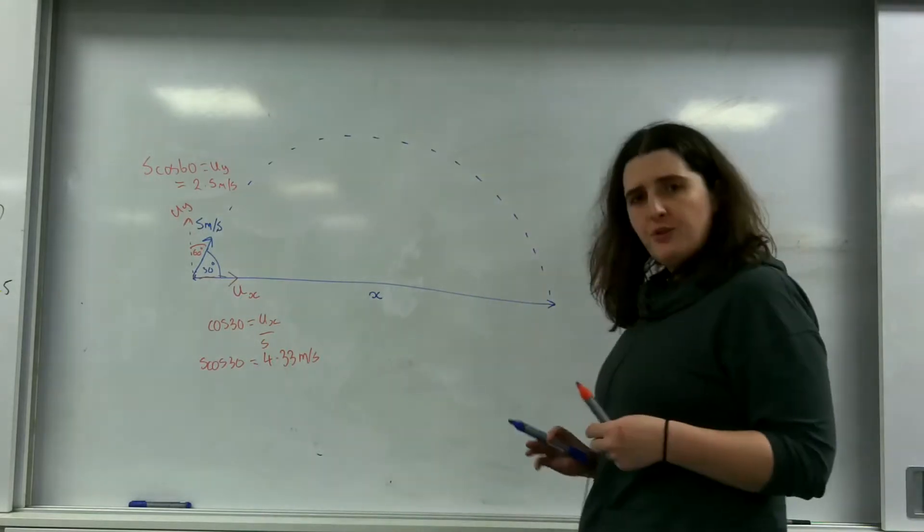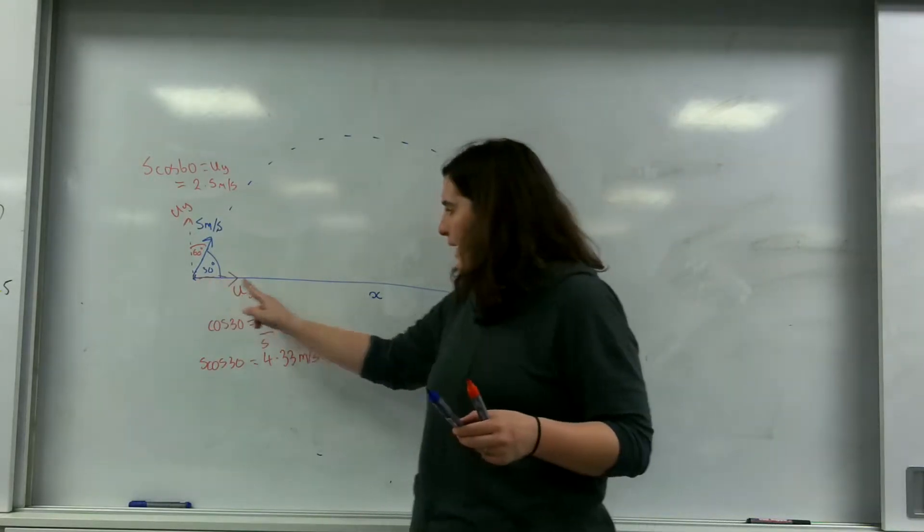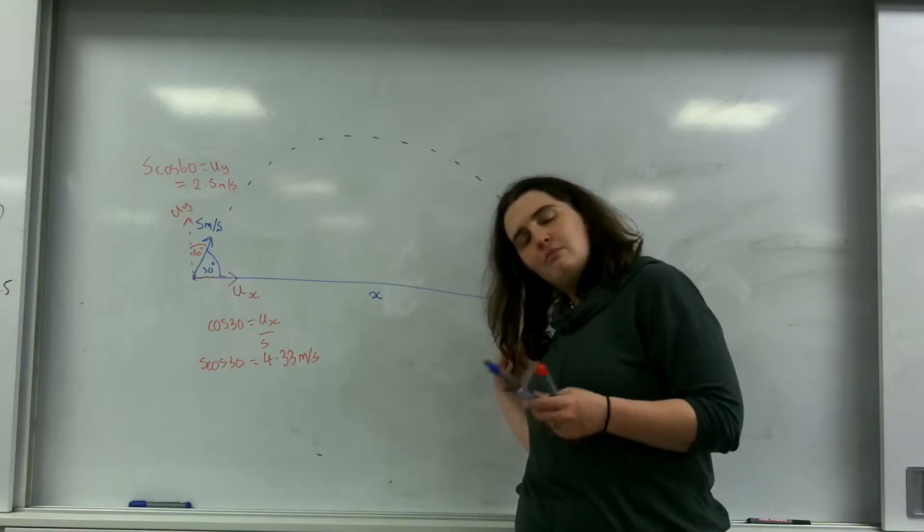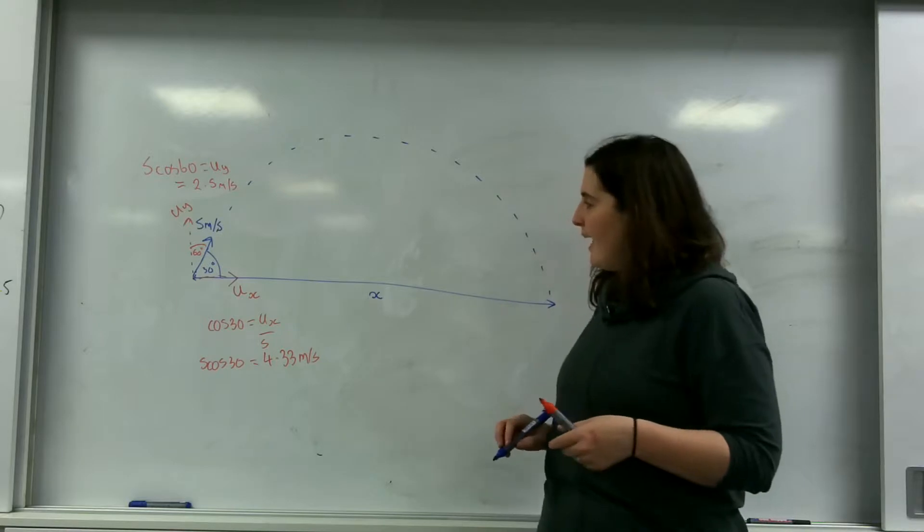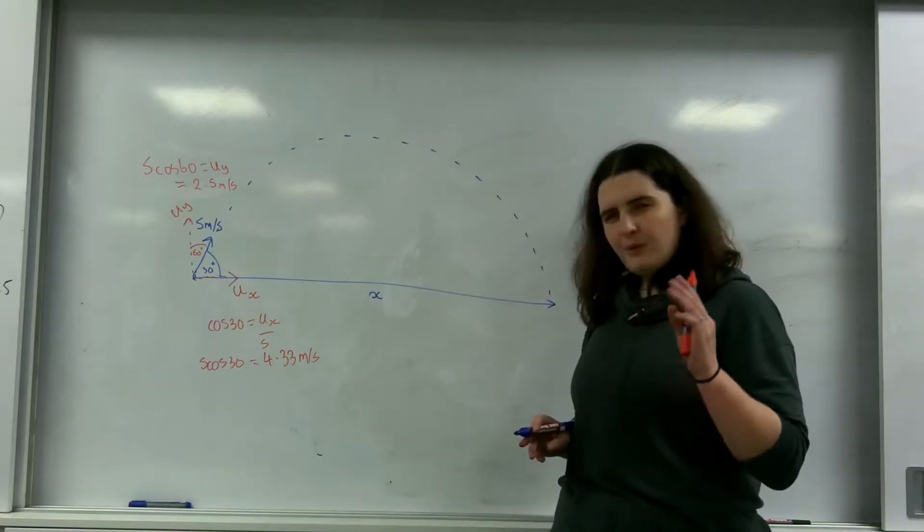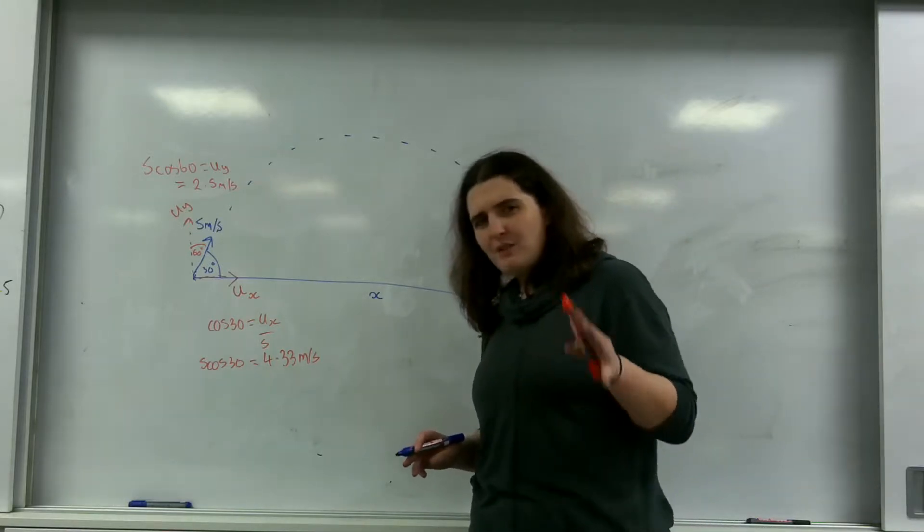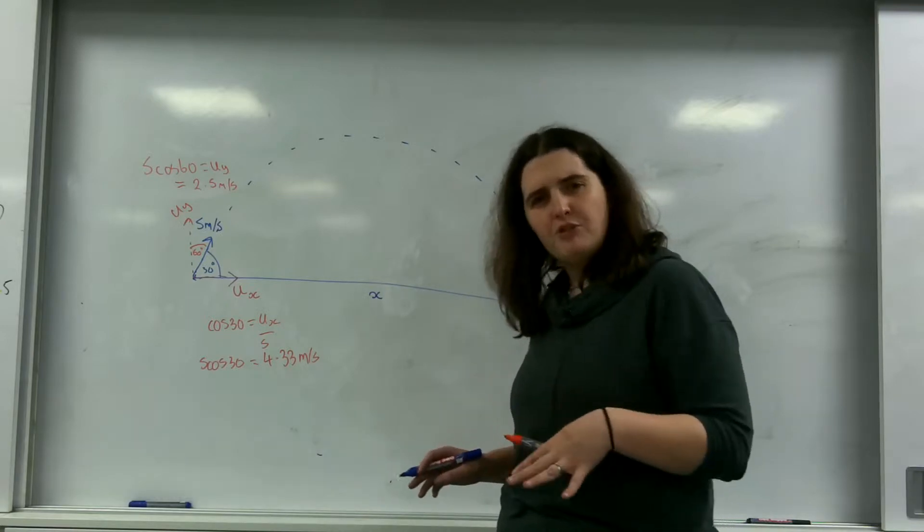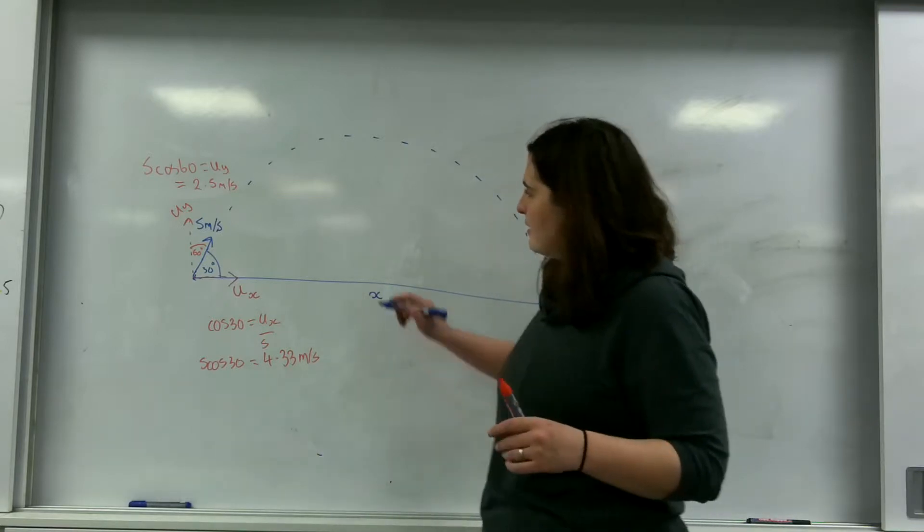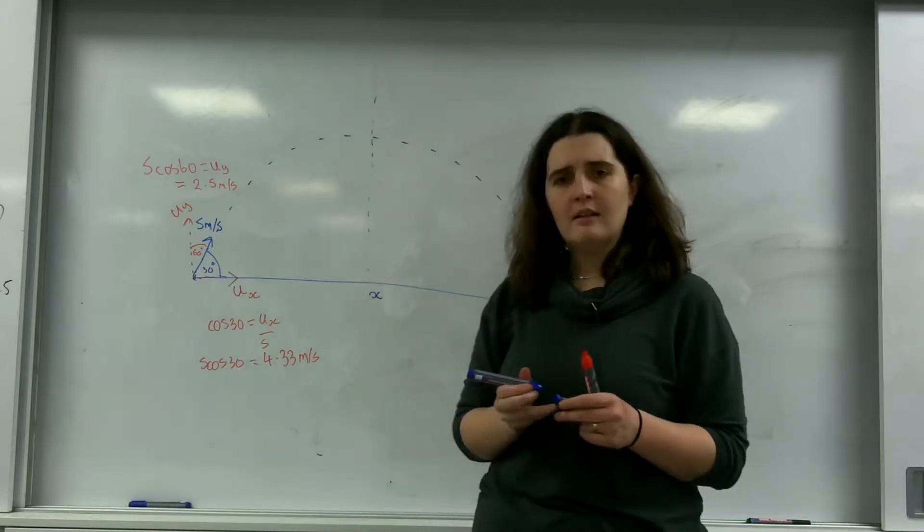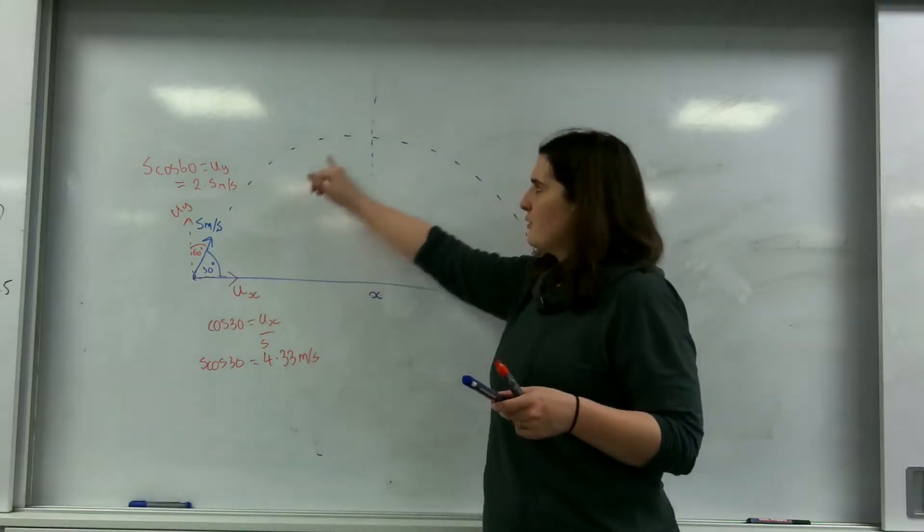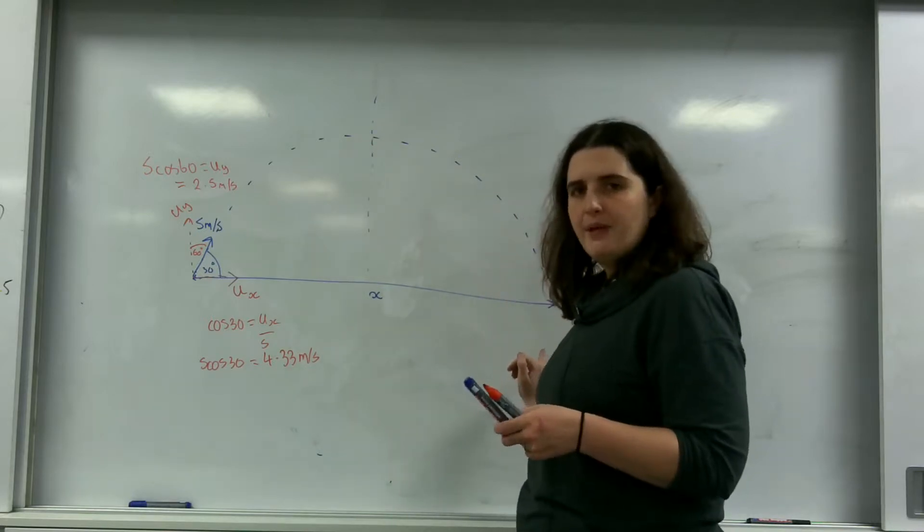So what I want to find out is I want to find the maximum range this object goes. How far does this cannon shoot? And the thing I said before, I said it was a parabola. And that's actually really important because this means it's symmetrical. This means if I draw a line up to the halfway mark here, that when I travel to this point, it's exactly the same travel as this point.